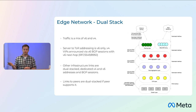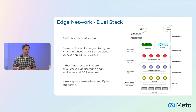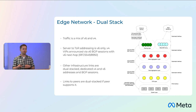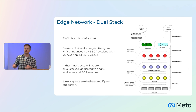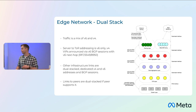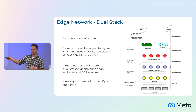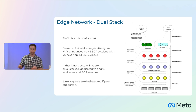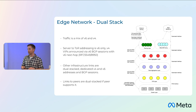We're using RFC 5549 / 8950, which superseded it, to carry any V4 addressing we do need, but with a V6 next hop. Obviously from these servers we're still having to announce V4, because as you saw, the vast majority of our traffic is still served over V4.